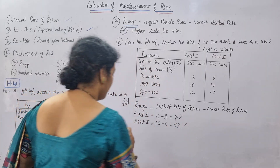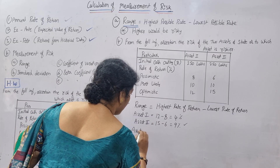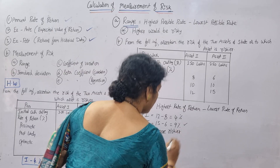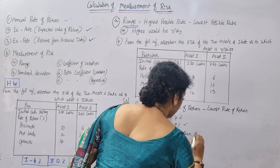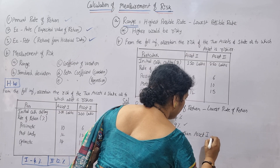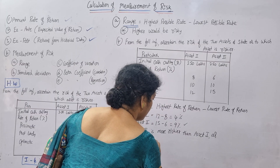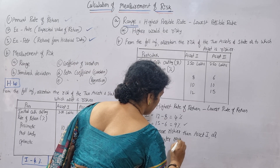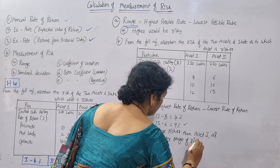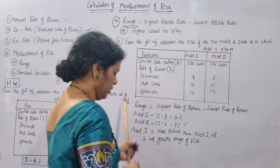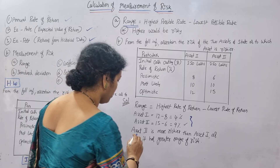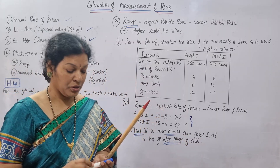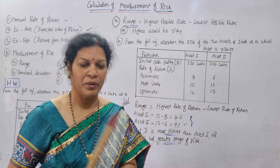The conclusion: Asset 2 is more riskier than Asset 1 as it has a greater range of risk. Remember — higher range means highest risk. This problem is very simple once you understand the concept.